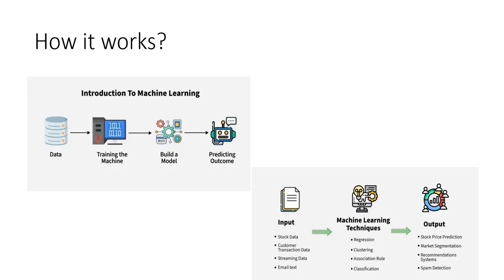Step number three: build a model. After training is done, the machine builds something called a model. Think of a model as a smart mathematical brain that knows how to make decisions. This model is created using different machine learning techniques like regression, classification, clustering, association rules, etc. Each technique is used for different types of problems.